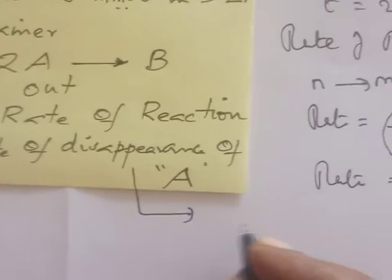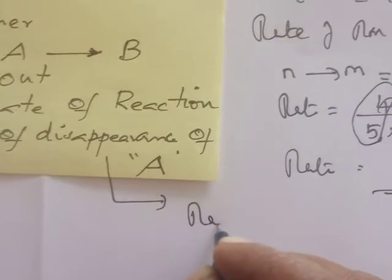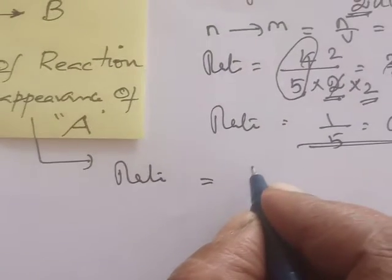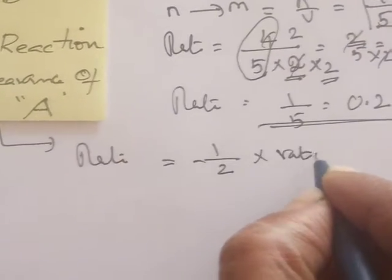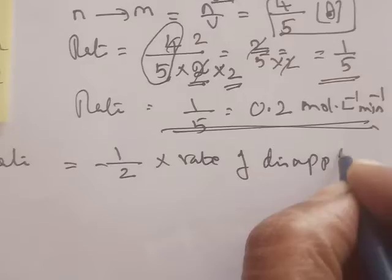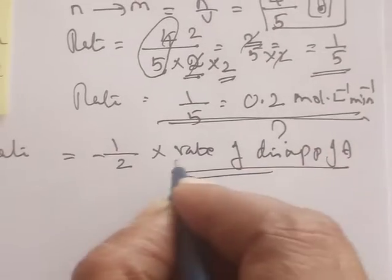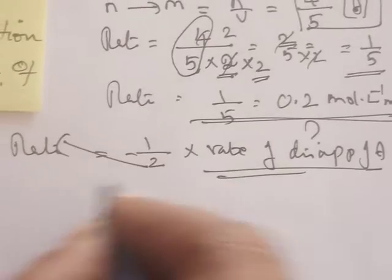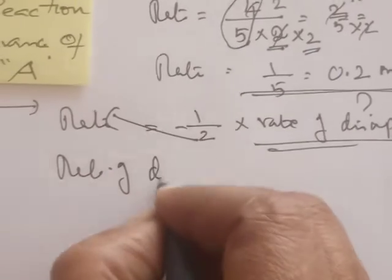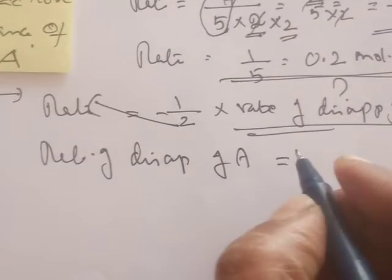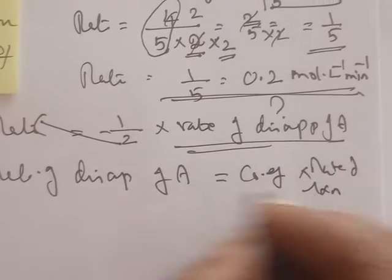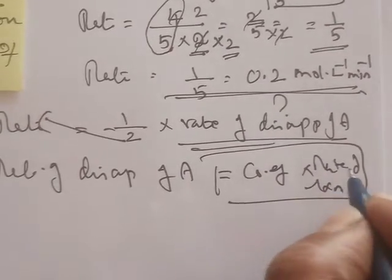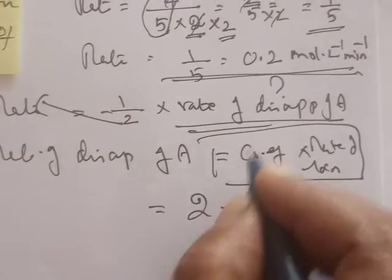Next, the question is: rate of disappearance of A. For the rate of disappearance of A, the formula is: rate of reaction equals minus 1 by 2 into rate of disappearance of A. So the rate of disappearance of A equals the coefficient multiplied by the rate of reaction. This is the formula: coefficient into rate of reaction.